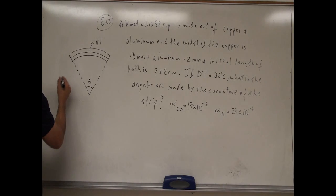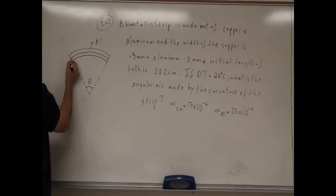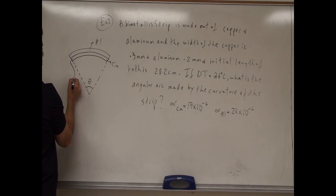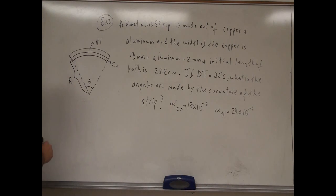So we can call the distance from the middle of this, the copper, from the middle of this to here, the radius r of the arc.